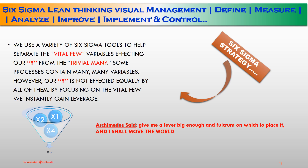We use a variety of Six Sigma tools to help separate the vital few — the variable defects affecting Y — from the trivial many. Some processes contain many variables; however, Y is not affected equally by all of them. By focusing on the vital few, we instantly gain leverage. Using the filter on X1, X2, X3, X4, I identified that X3 is the one that will deliver what I need in order to have my espresso T. As Archimedes said: give me a lever big enough and a fulcrum on which to place it, and I shall move the world.